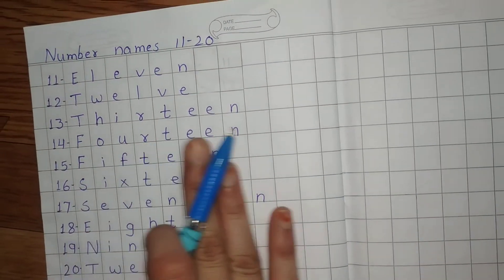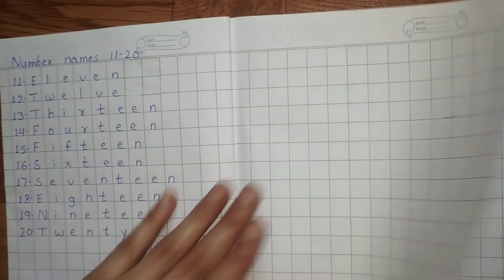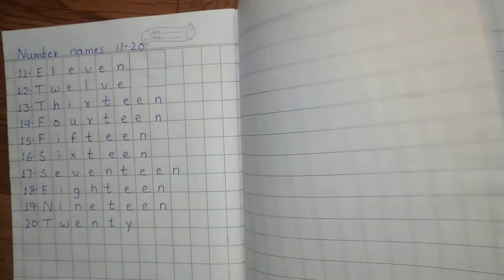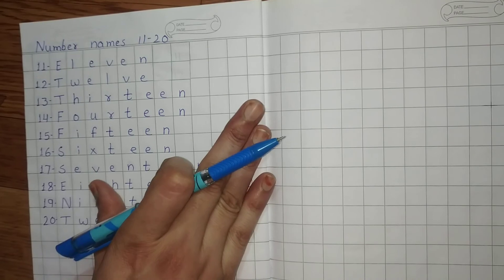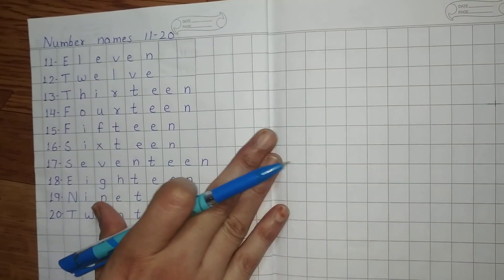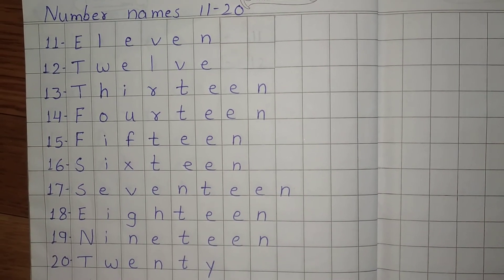So you have to learn it and write it three times. Okay, children? Here, here, and here. Write 11 to 20 number names, and 1 to 10 number names also you have to learn it.